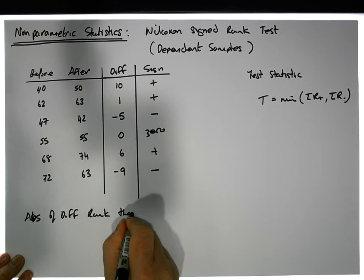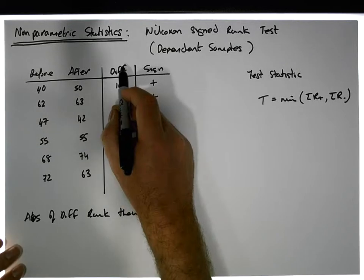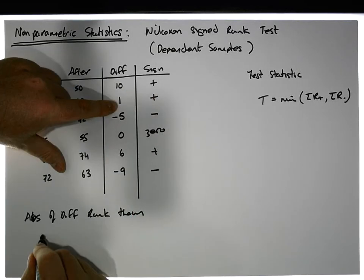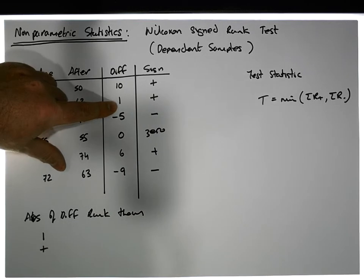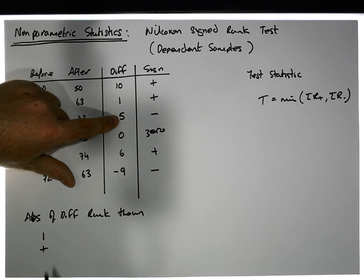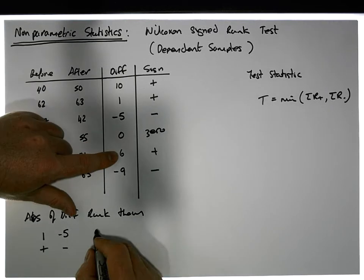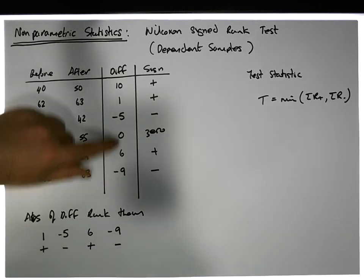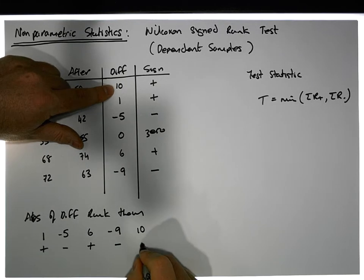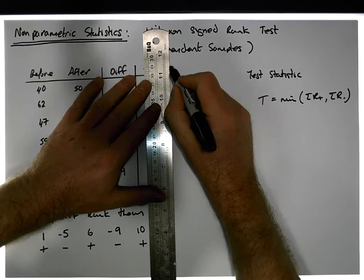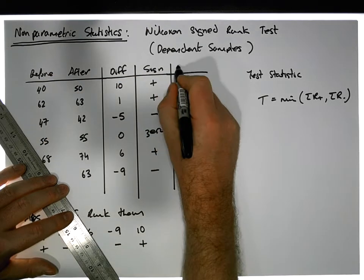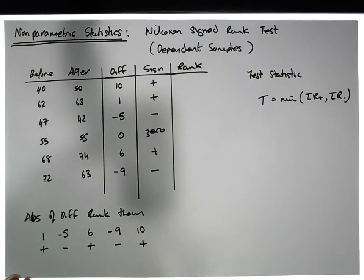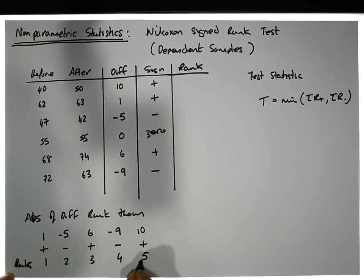Next, we look at the absolute values of the differences — excluding zero — and we rank them. The smallest absolute value is 1, associated with the positive group. The next smallest absolute value is 5 (from minus 5), associated with the negative group. Then 6, associated with positive; minus 9, associated with negative; and 10, associated with positive.